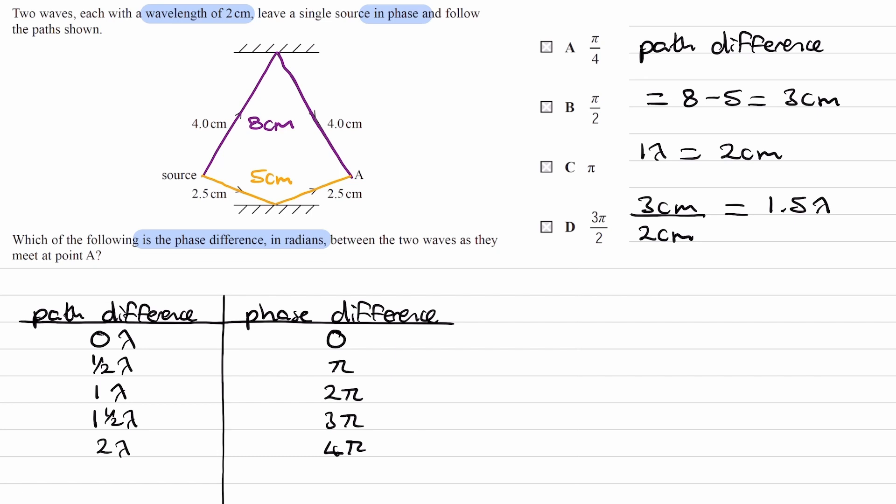So what I mean by that is, let's say we have a phase difference of 4π over here. We can take away 2π away from that twice to end up with a phase difference of 0. Same with the 2π. We can take away a phase difference of 2π to end up with a phase difference of 0.